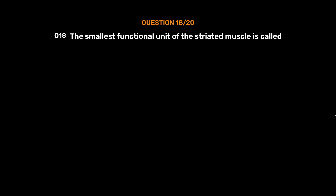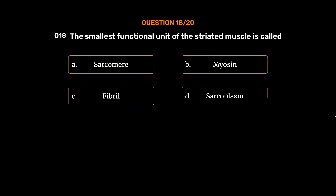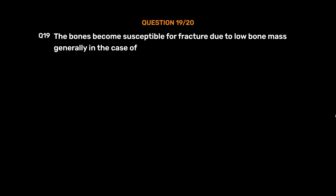Question No. 18. The smallest functional unit of the striated muscle is called: Option A. Sarcomere, Option B. Myosin, Option C. Fibril, Option D. Sarcoplasm. The correct answer is Option A, Sarcomere.